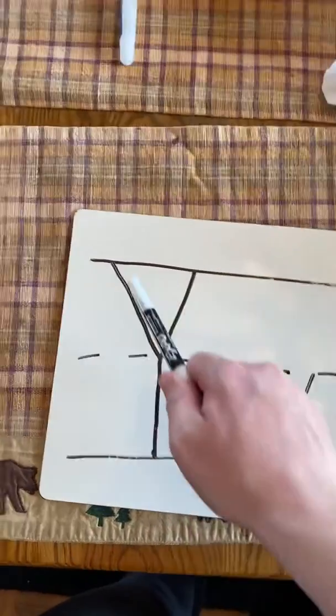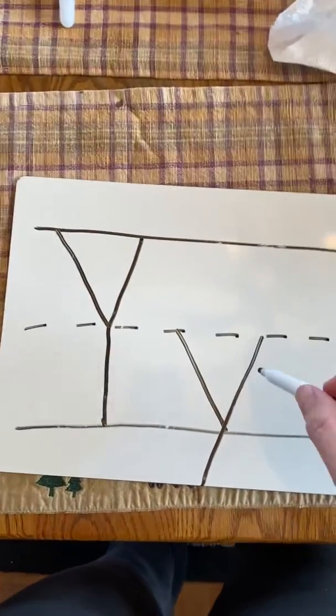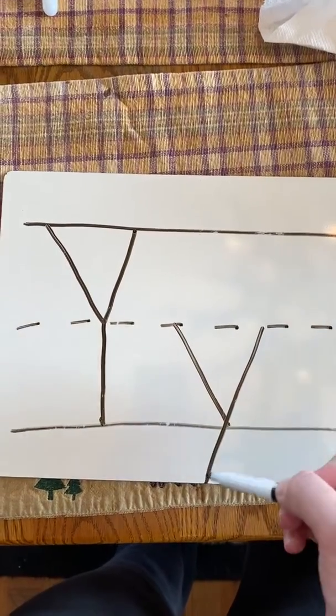We made a V in the air and then we had a pull to hold it there. Today we are going to work on lowercase y. We're going to slant right to the bottom and left to the basement.